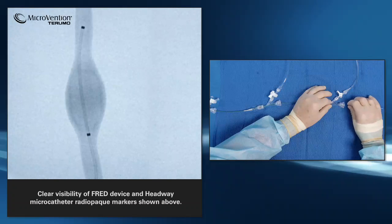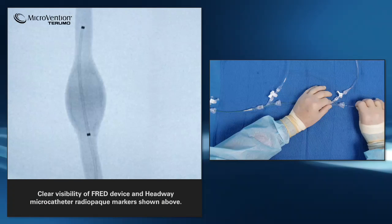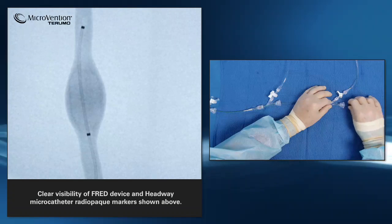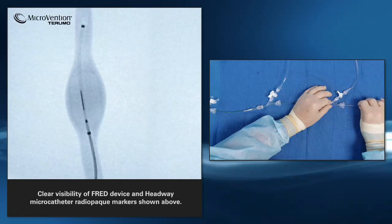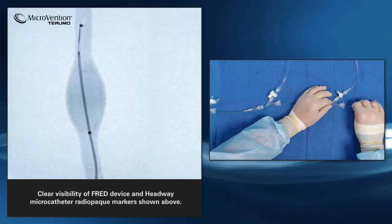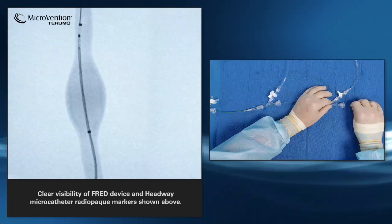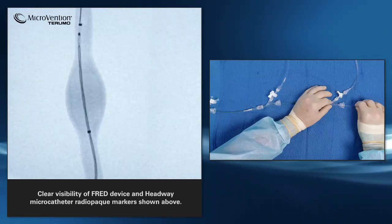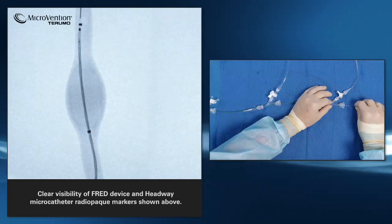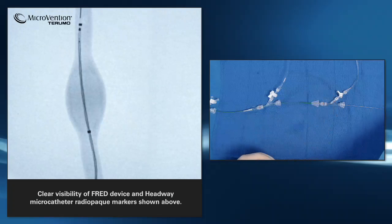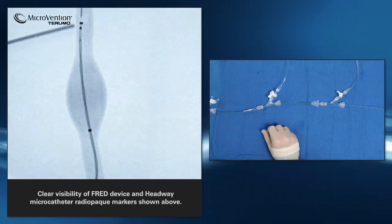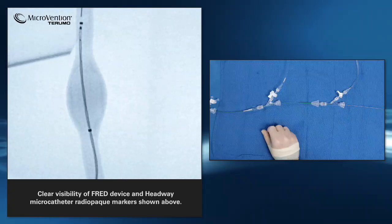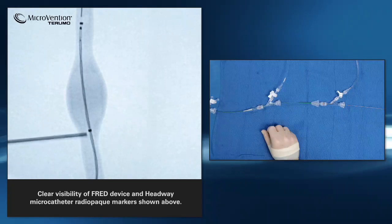Position the microcatheter in the desired location, distal to the aneurysm. Advance the FRED system to the desired location. Here you can clearly see FRED approaching the distal tip of the microcatheter. Here you can see the stent distal flared end markers followed by the headway microcatheter proximal tip marker.